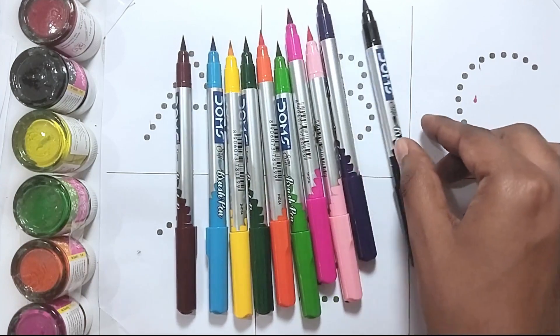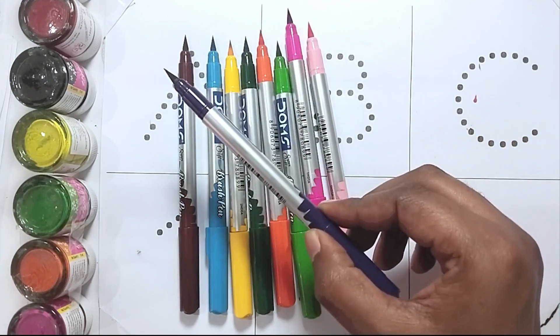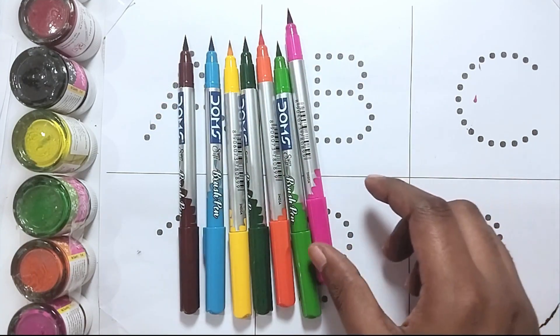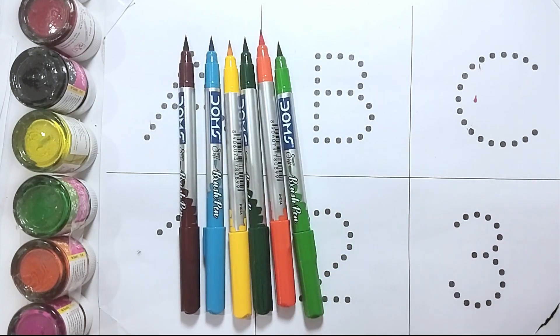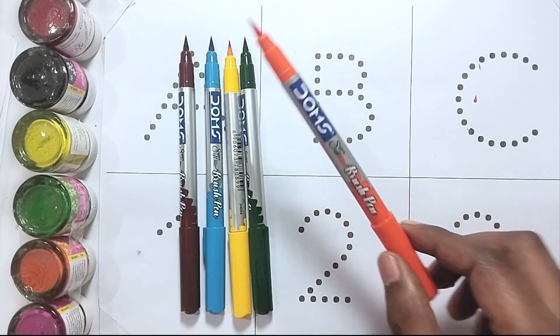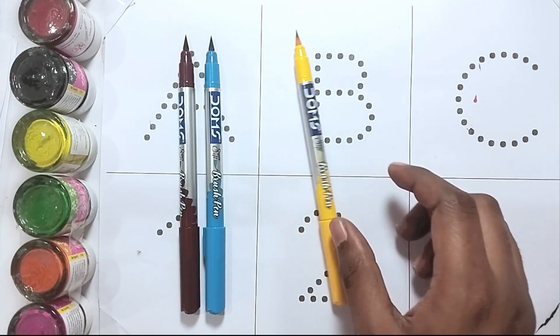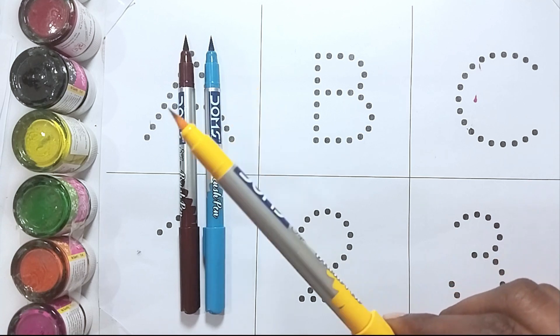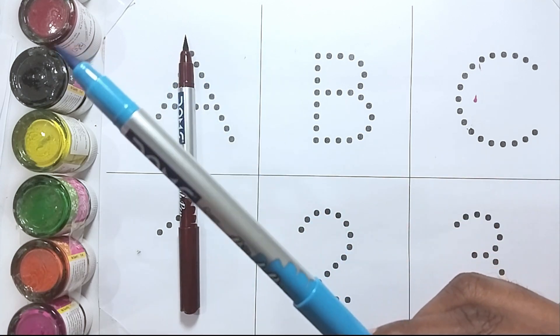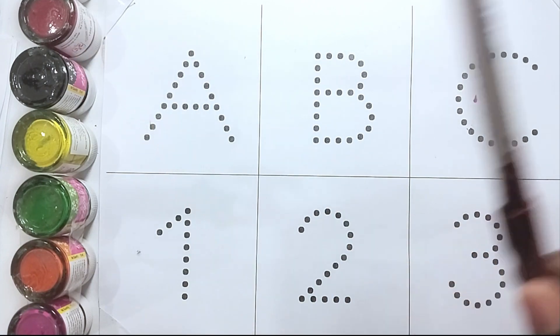These are our colors: black, purple, light pink, pink, light green, orange, green, yellow, sky blue, and brown.